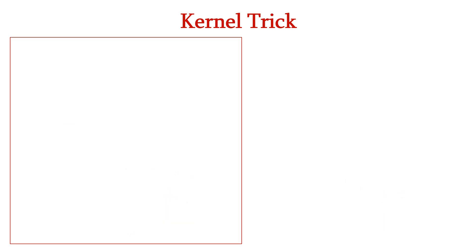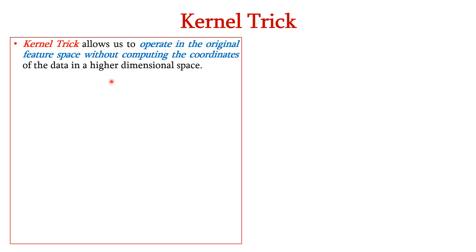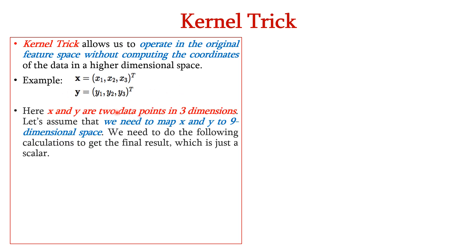Now, let us understand the purpose of Kernel Trick. Kernel Trick allows us to operate in the original feature space without computing the coordinates of the data in a higher dimensional space. For example, consider x equal to (x1, x2, x3) and y equal to (y1, y2, y3). Here, x and y are two data points in three dimensions.